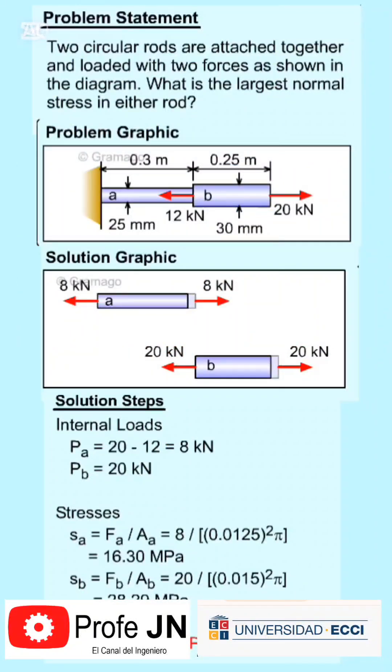The problem states that two circular rods are joined together and loaded with two forces as shown in the diagram. What is the maximum normal stress in each rod?